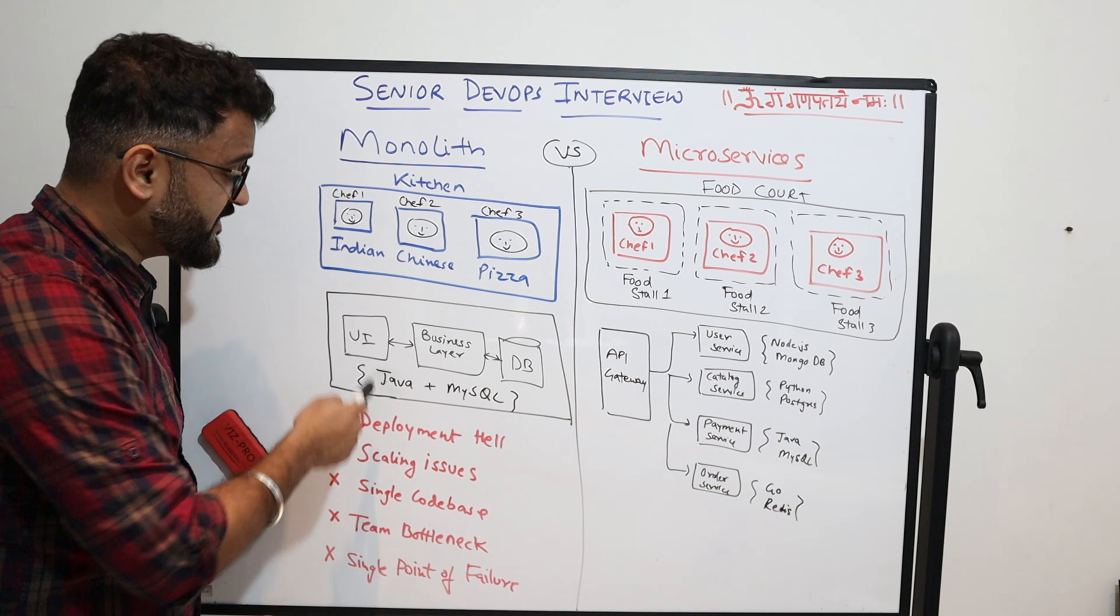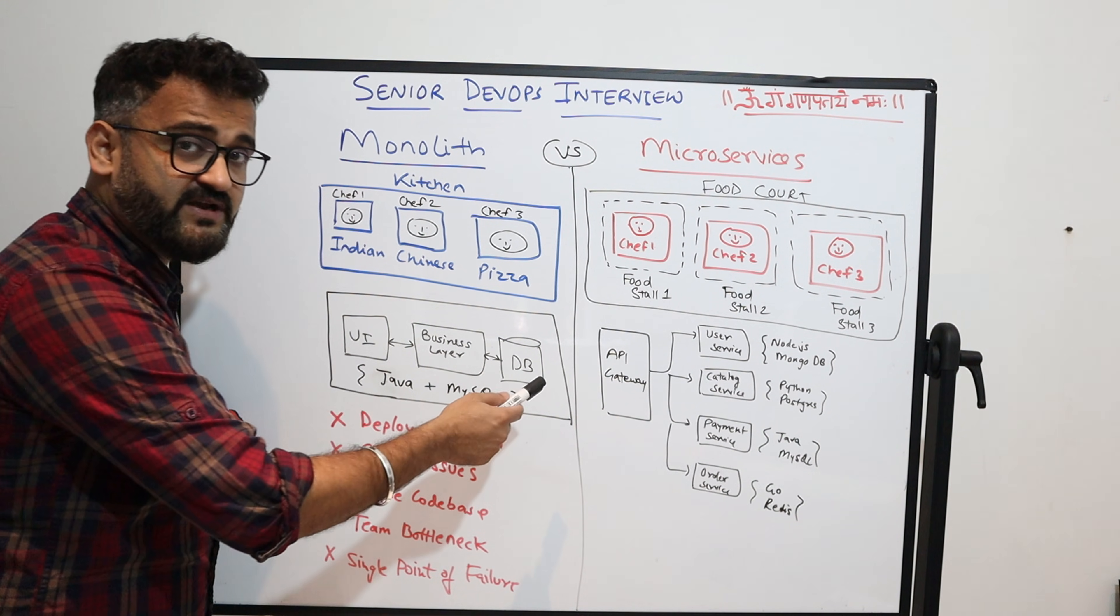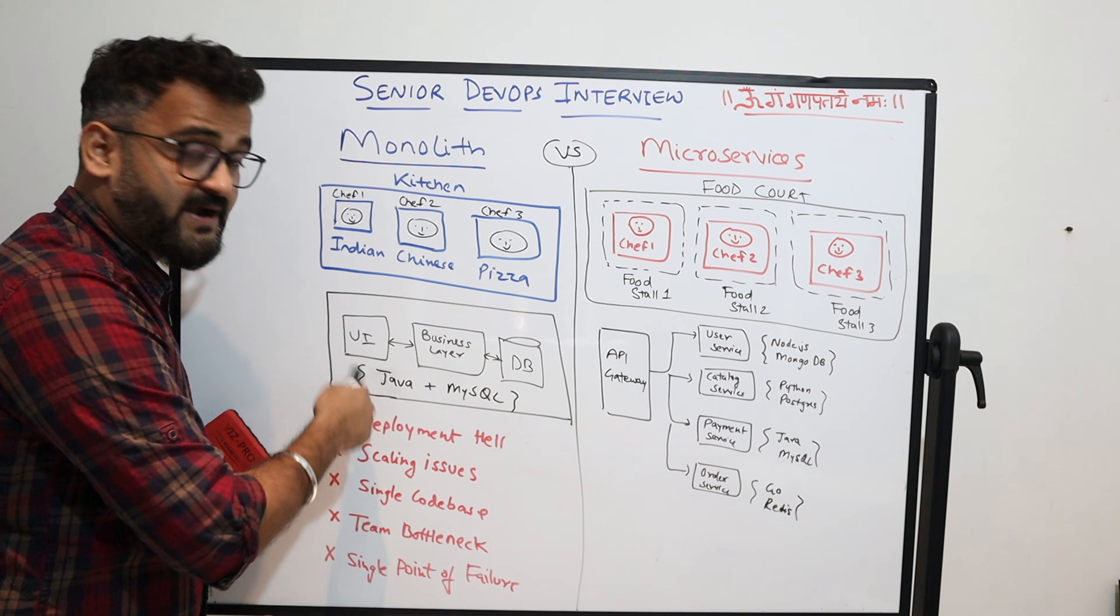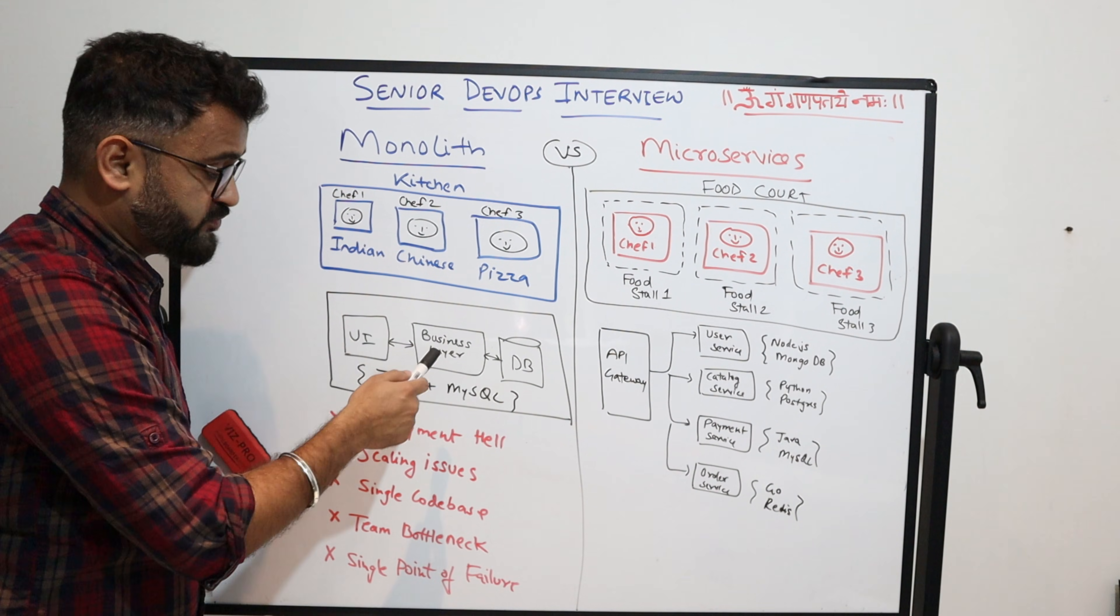You have to bring the whole system down. Even if you have to deploy something on the user interface, you have to make sure that everything else is also down. Scaling cannot happen independently. Everything is interdependent and because it is a single point of failure, it creates a huge bottleneck.